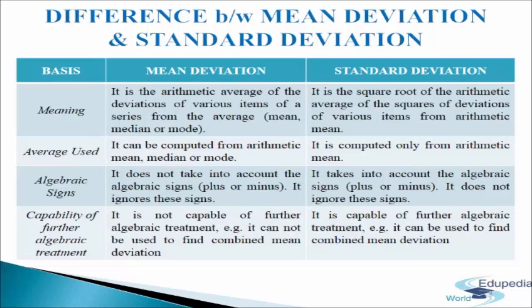The second basis is the average used. Mean deviation can be computed from arithmetic mean, median, or mode, whereas standard deviation is computed from the arithmetic mean only. The third basis is algebraic signs. Mean deviation does not take into account the algebraic signs plus or minus — it ignores these signs. Whereas standard deviation takes into account the algebraic signs and does not ignore them.